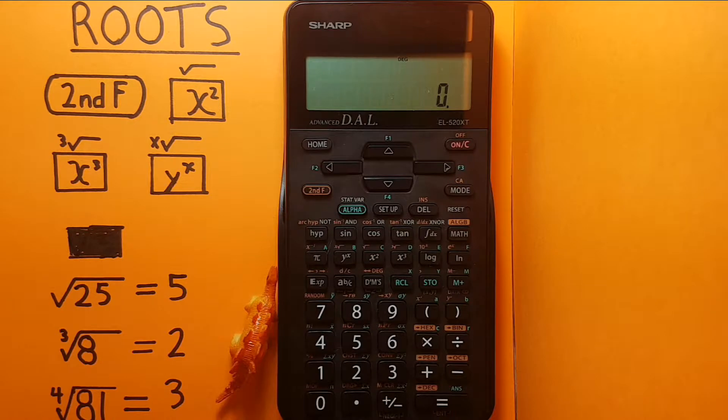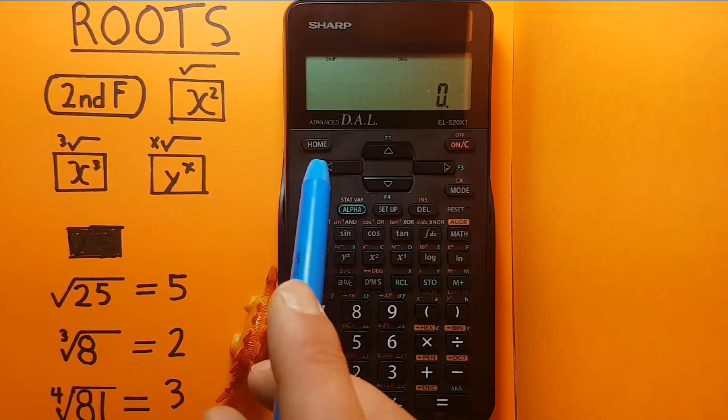Alright, let's start with the basics. Let's say we want to find the square root of 25. We start by entering the square root symbol.